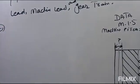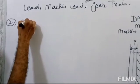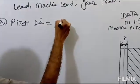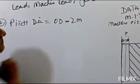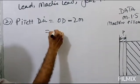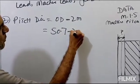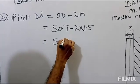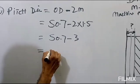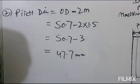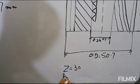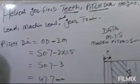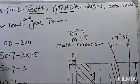Number 2: Pitch Diameter (PD). The formula is PD = OD − 2 × module. So: 50.7 − (2 × 1.5) = 50.7 − 3 = 47.7 mm. The pitch diameter is 47.7 mm.